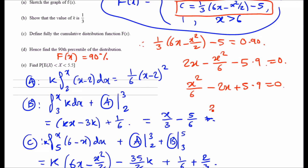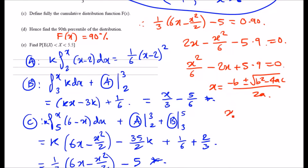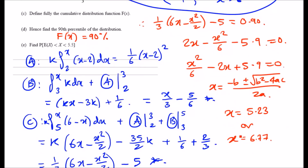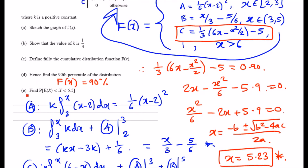Applying the quadratic formula with a = 1/6, b = minus 2, c = 5.9, we get two results: 5.23 or 6.77. Since x must lie between 5 and 6, the value 6.77 is outside the valid range — if x exceeded 6 the CDF would equal 1, not 0.9. Therefore the 90th percentile is x equals 5.23.